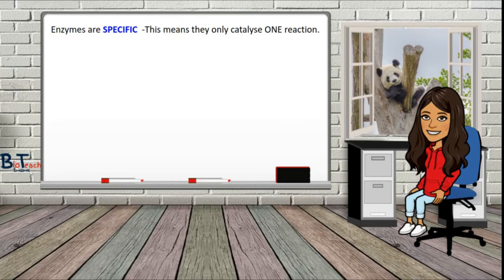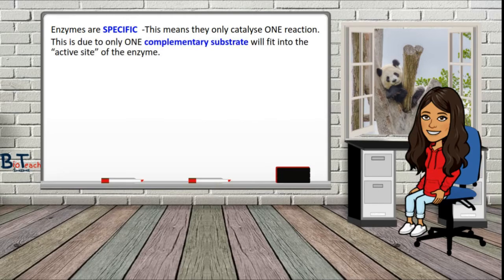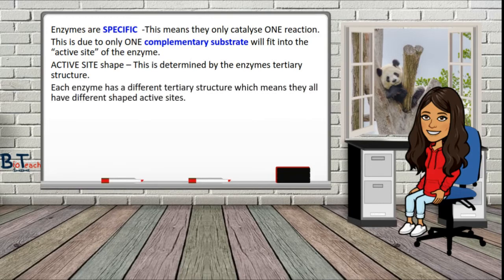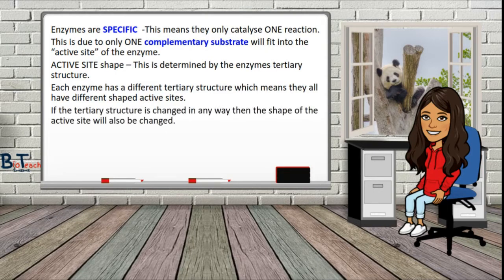Enzymes are specific, meaning they'll catalyse just one reaction. You've got hundreds of different enzymes catalysing different reactions. The reason they only catalyse one reaction is because they only have one complementary substrate that will fit into the active site. This active site shape is determined by the enzyme's tertiary structure. Each enzyme has a different tertiary structure, meaning different active site shapes. If that tertiary structure is changed — by things like pH or temperature — the shape of the active site will also change.